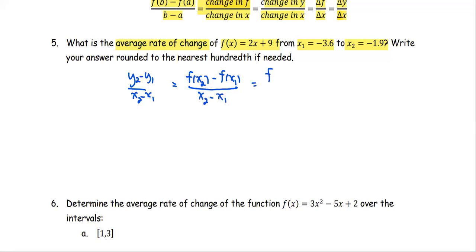In the form of the function at negative 1.9 minus the function at negative 3.6, all divided by x2, which is negative 1.9 minus negative 3.6. On the side note, let's find the function value of each x.